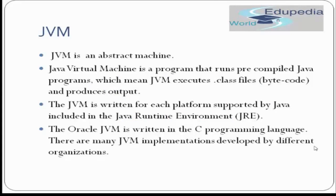Firstly we will cover JVM. JVM is an abstract machine — that is Java Virtual Machine. It is a kind of program that runs pre-compiled Java programs, which means JVM executes the .class file and produces the output. When we talk about Java Virtual Machine, it is not hardware; it's an abstract, virtual machine — a software that is actually installed on your computer — and what it does is it simply runs the pre-compiled program, that is your .class file.